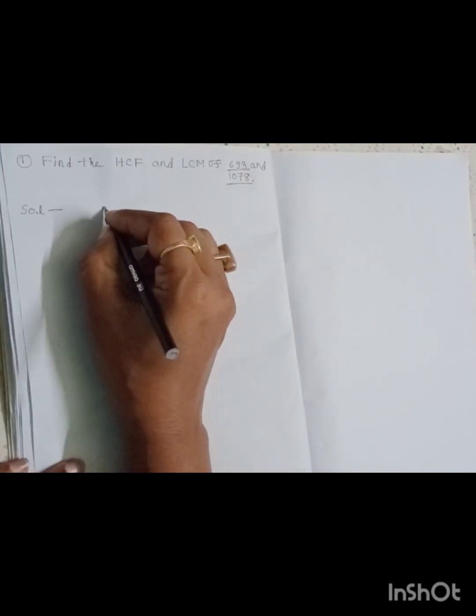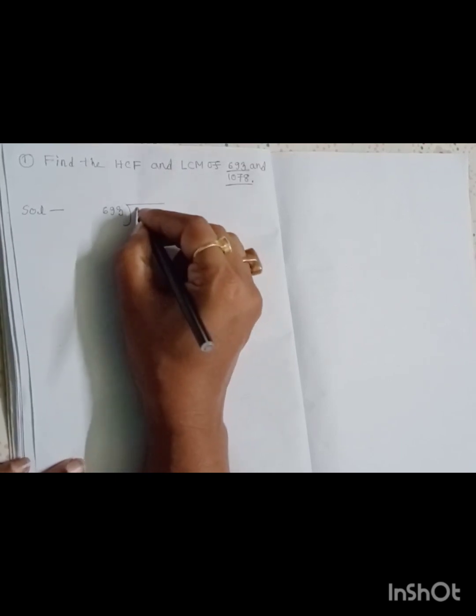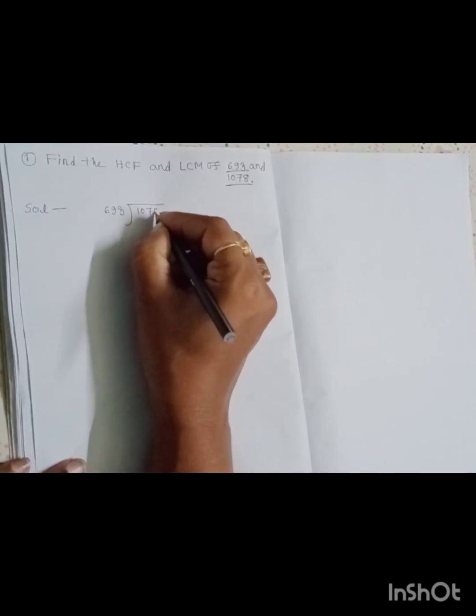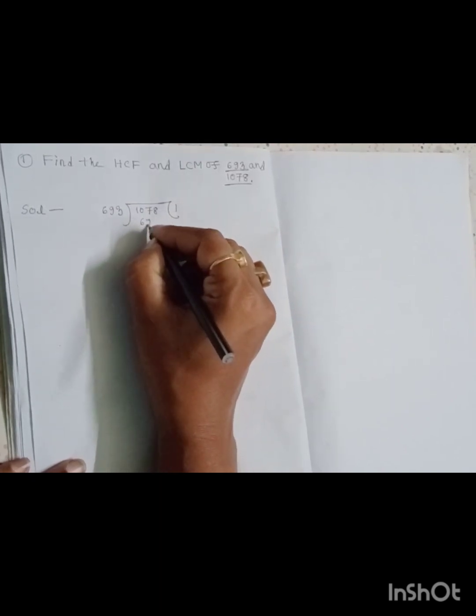Here, 693 is the divisor and 1078 is the dividend.